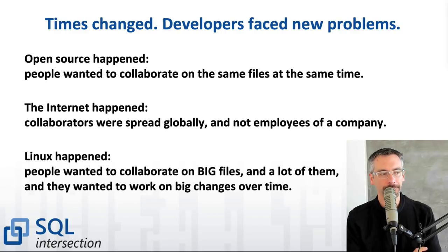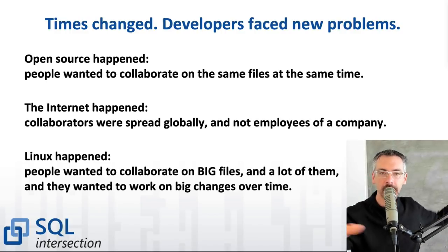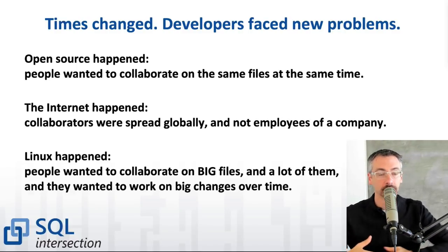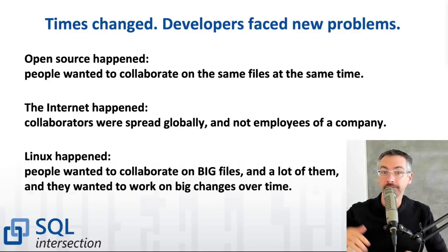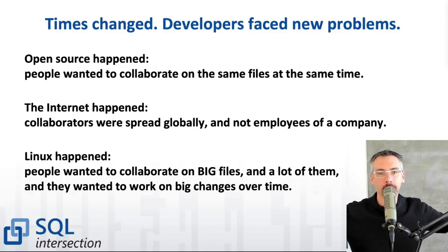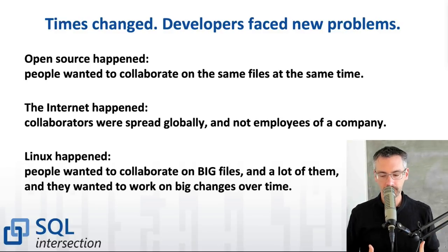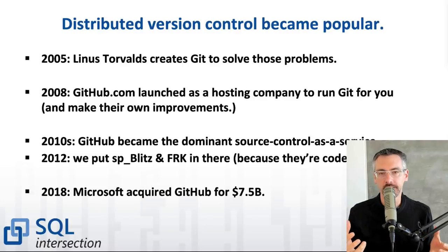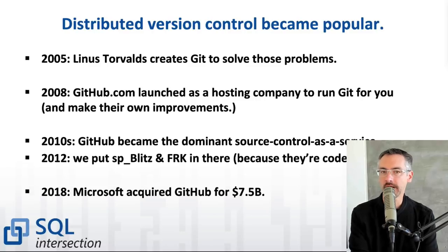When we talk about open source, that means a lot of people all over the world trying to collaborate on the same piece of software at the same time. With Linux — massive numbers of files, very long files — people were trying to work in the same file at the same time. You needed to track who was working on what and let people merge their code back together. Because of the difficulties using traditional version control, the same guy who built Linux — Linus Torvalds — created Git to solve these problems.